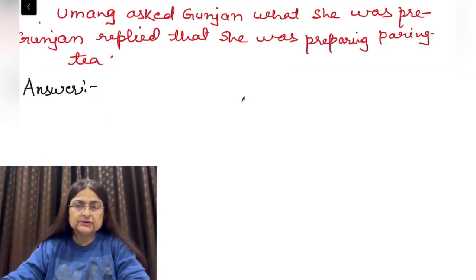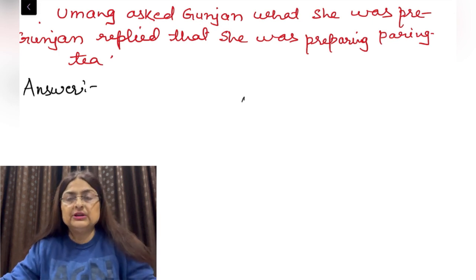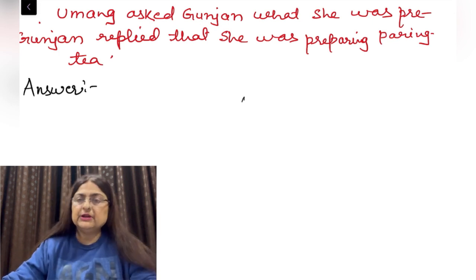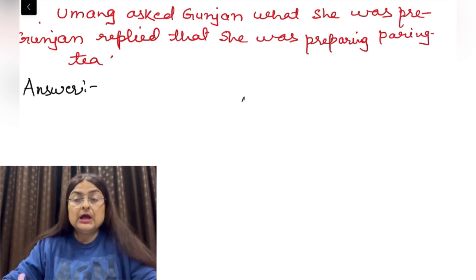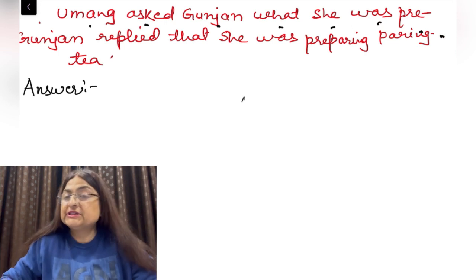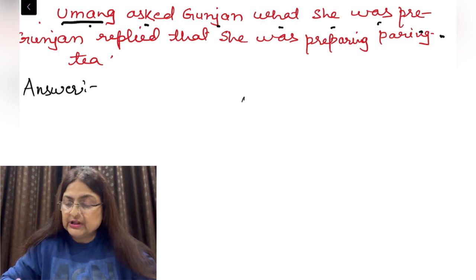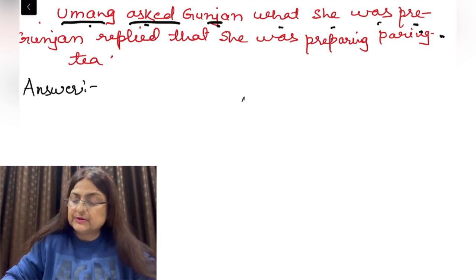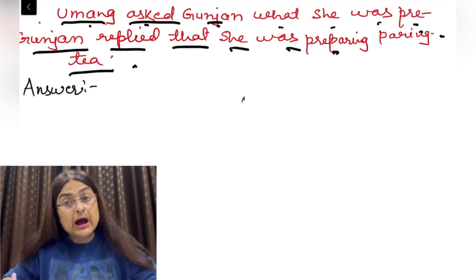Now this time: transform the following sentence into direct speech. In the previous example I gave you indirect speech. Now change it into direct speech. The example is given here: 'Anum asked Gunjan what she was preparing.' Look at this question carefully. 'Anum asked Gunjan what she was preparing. Gunjan replied that she was preparing tea.'